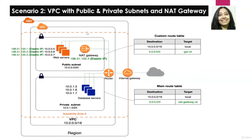In AWS, in a specific region, we will be creating a VPC with CIDR block 10.0.0.0/16. In this VPC, we will be creating two subnets. The first subnet has a CIDR block of 10.0.0.0/24 and the second one has a CIDR block of 10.0.1.0/24.